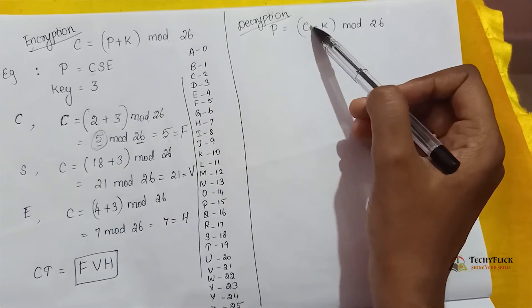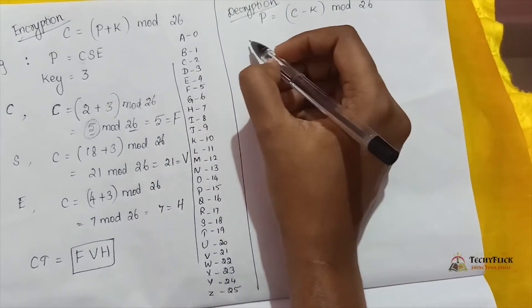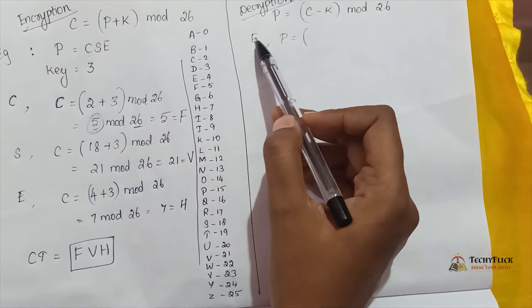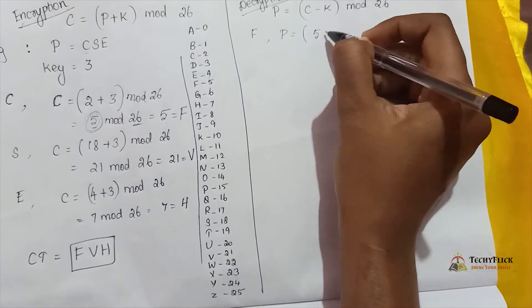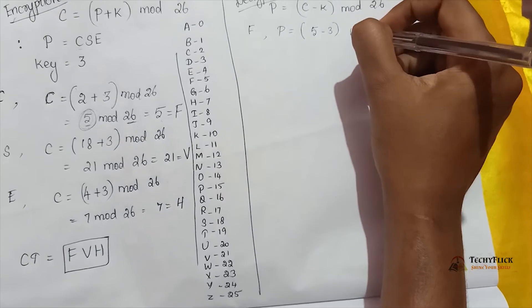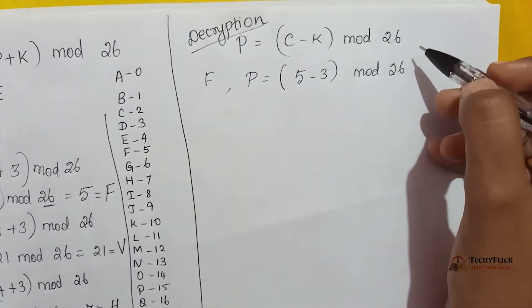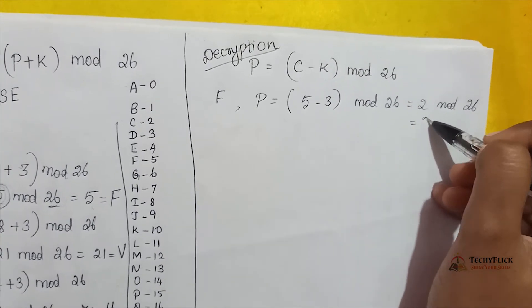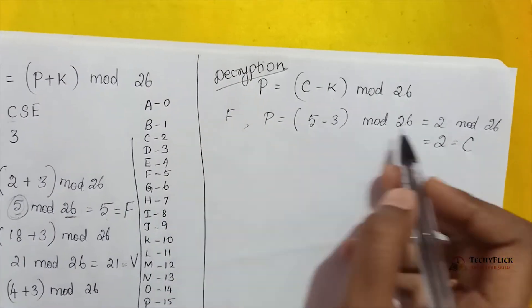Now convert FVH plain text using the decryption formula: P equal to C minus K mod 26. Cipher text F has value 5, so 5 minus 3 mod 26. 5 minus 3 is 2, 2 mod 26, so answer is 2. 2's value is C, so F converts to C.